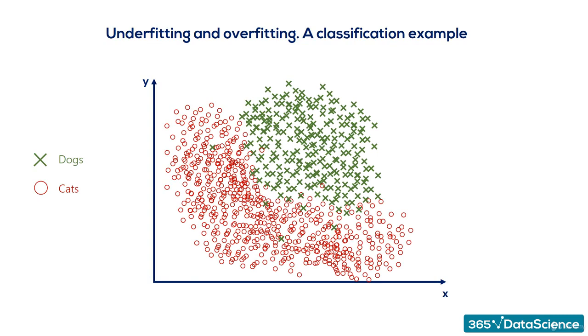There are two categories. One of them is cats, and the other one is dogs. A good model explaining all the data looks like this. A quadratic function with a few errors.